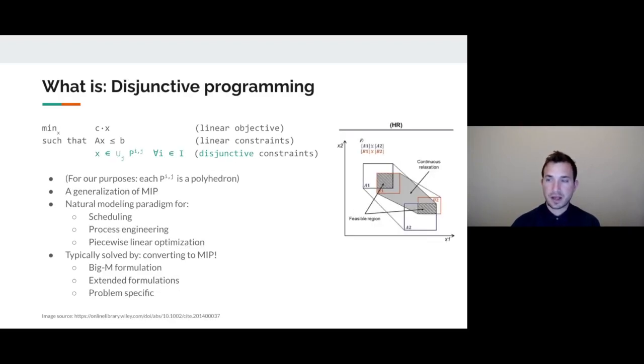Our second class of optimization problems are disjunctive programming problems. These look very familiar from the previous slide, except we now have disjunctive constraints that constrain our decision variables to lie in a finite union of sets. You can view this as a generalization of MIP, but really it's a way of naturally modeling complex logical constraints into your optimization problem.